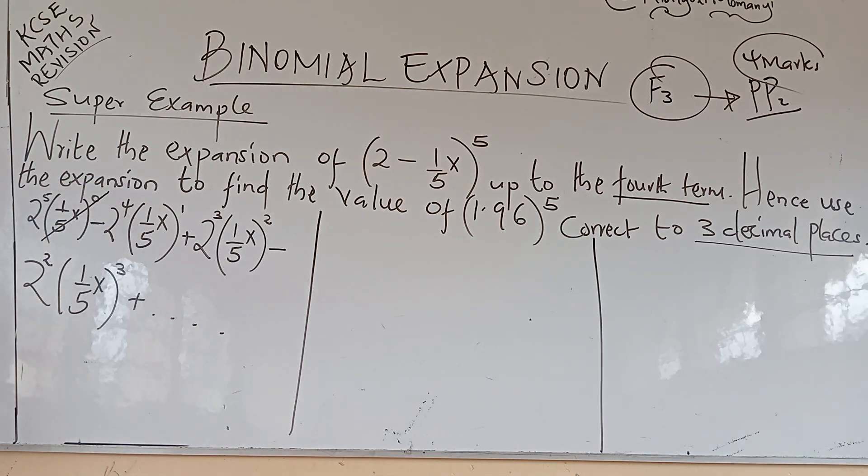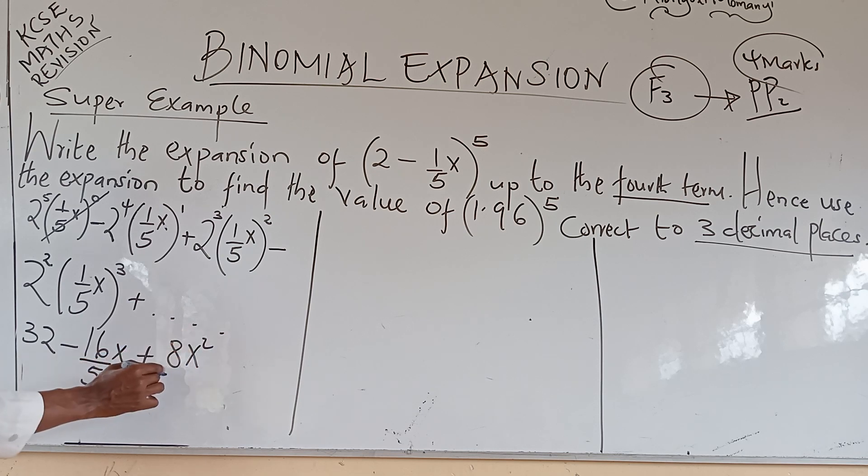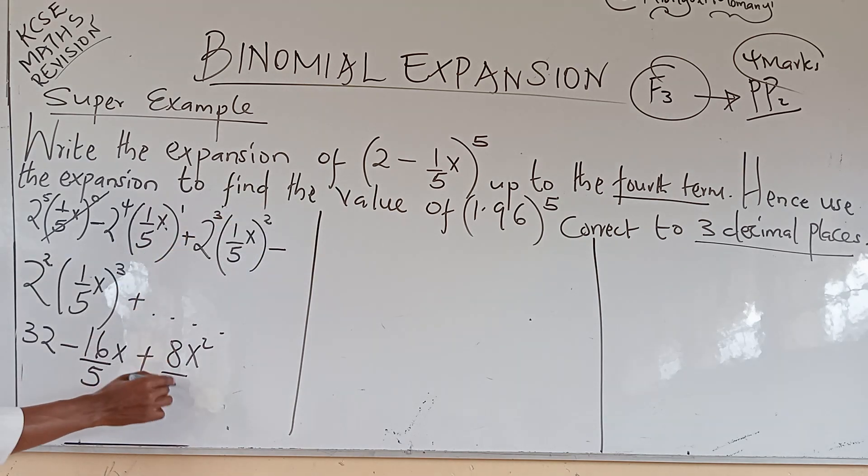Now, in this case, this one cancels because any number raised to zero is one. Two power five is 32, minus two power four is 16, multiplied by this one power one. So, we'll be 16 over 5x. Then, plus, two power three is eight. Eight x squared over five power two. Five power two, which is 25.